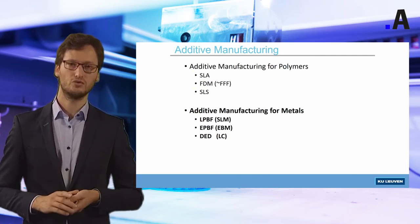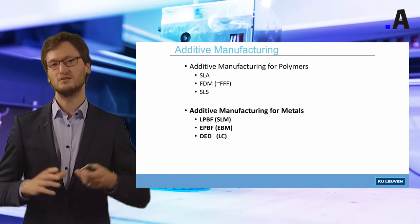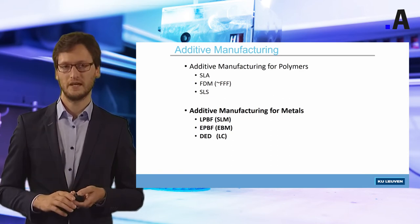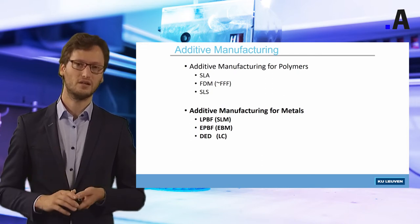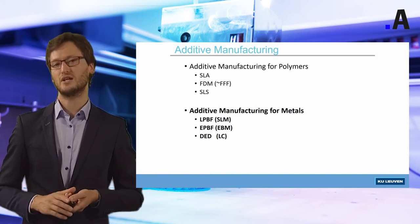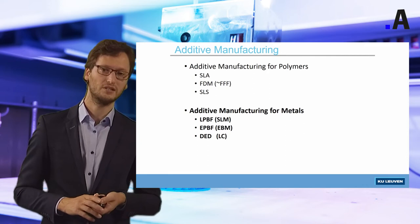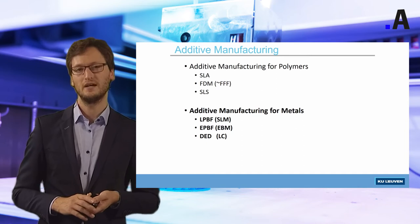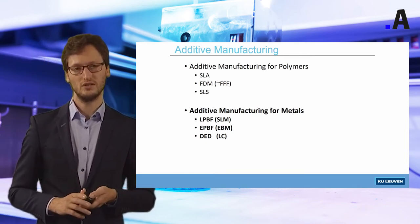Let us now go to 3D printing of metals. This is a more challenging area, because melting metals requires more complex and expensive equipment. In this webinar I will cover three of the most widely used technologies for printing metals: laser powder bed fusion, also called SLM or selective laser melting; electron powder bed fusion or EBM, electron beam melting; and direct energy deposition, DED, also called laser cladding.